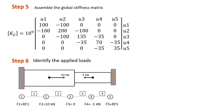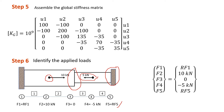Looking at our problem, we identify the applied loads at each node. Node 1 is a fixed joint, so we only have a reaction force. At node 2, we have an applied load of positive 10 kilonewton. At node 3, there is no applied load, so F3 equals 0. At node 4, we have negative 5 kilonewton. At node 5, again we have a fixed joint, meaning we will have a reaction force.